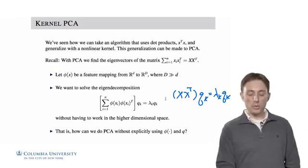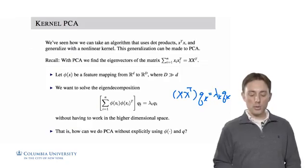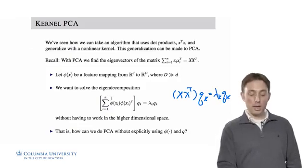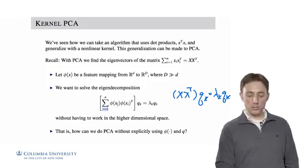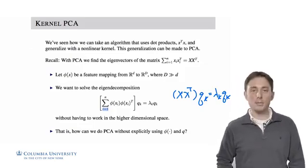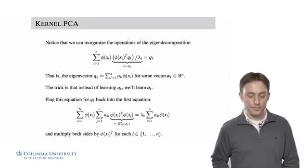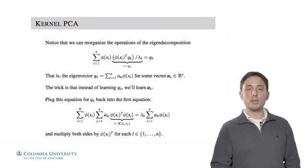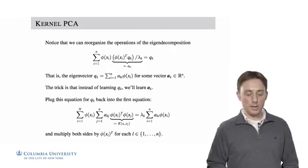How can we do PCA in this higher dimensional space — how can we learn q_k and lambda_k in an even higher dimensional space? For example, with Gaussian kernels this is an infinite dimensional space. So we want to see how we can sidestep that issue. Here's where some sleight of hand comes into play — the mathematical tricks that we can do to fix this problem.